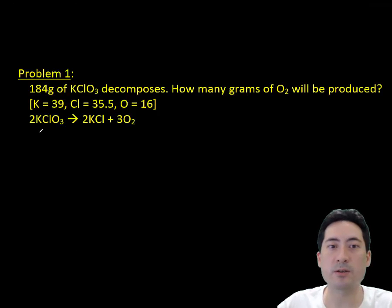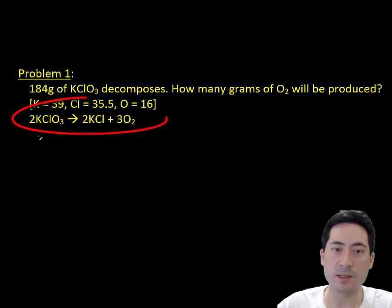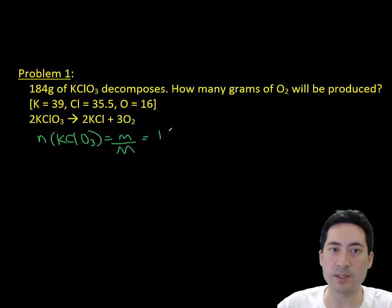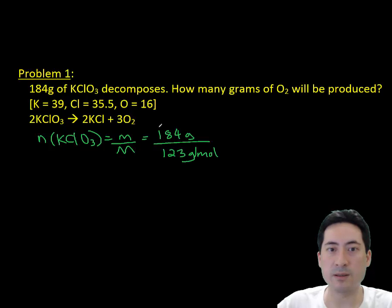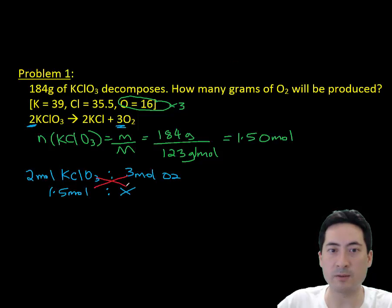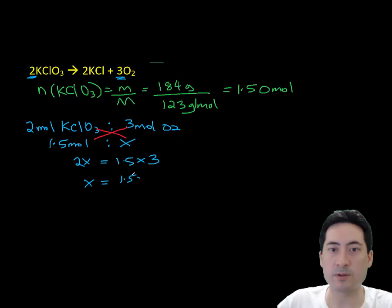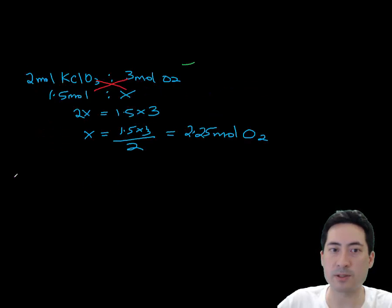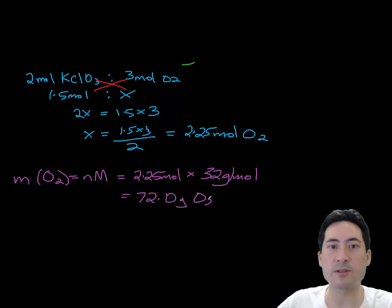So the first problem here, if you've got 184 grams of potassium chlorate, how many grams of oxygen will you get? So we're going to use these simplified atomic masses here. First, we draw out the chemical formula and make sure it's balanced so we can get our ratios correct. We start with the number of moles that we have of potassium chlorate, which is 1.5. Using the ratio, we then can work out that that will give us 1.5 times 3/2, 2.25 moles of oxygen. Question wants us to give the mass of oxygen. So then we just use that formula again, sub that in and we get 72 grams of oxygen.